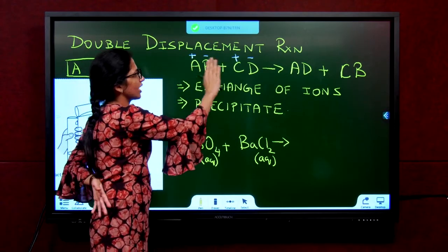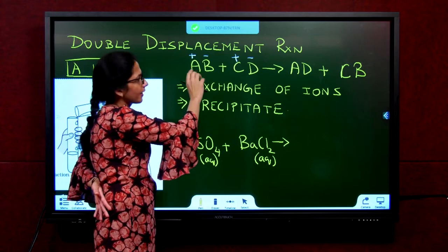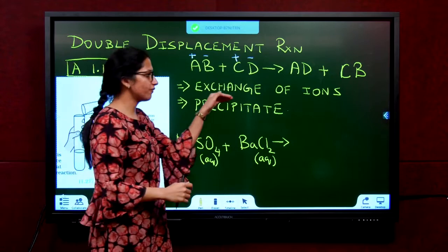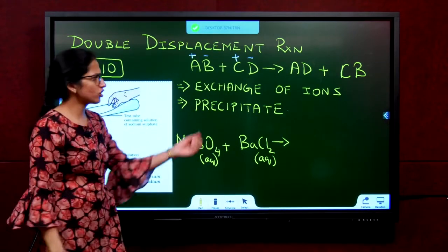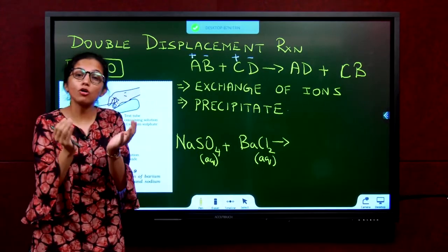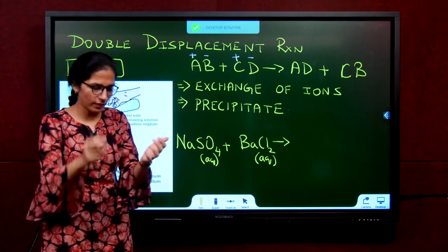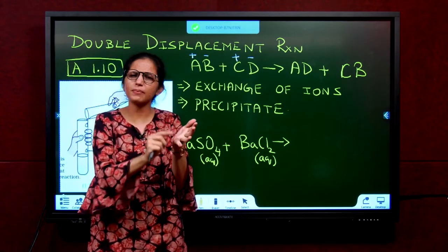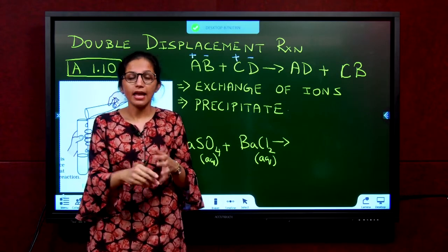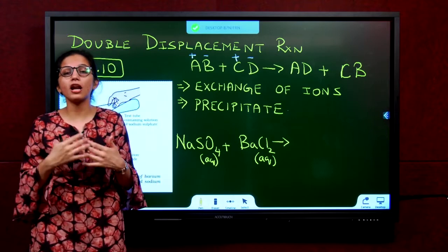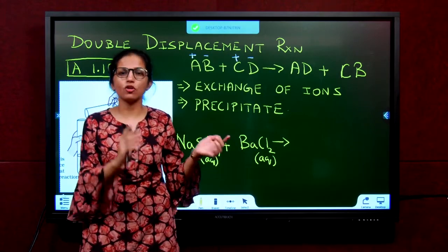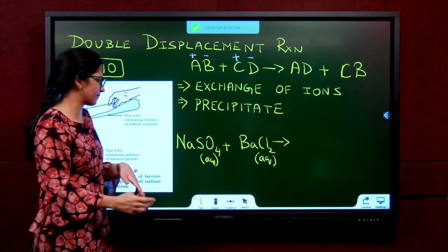Ions are getting exchanged — A comes and sits here, C comes and sits here, so AD and CB form. Usually in double displacement reactions, we take two solutions, mix them, and get one solid product. That solid forming in the solution is called a precipitate, and such reactions are also called precipitation reactions. The definition of precipitation reaction is given in the notes — refer the notes.